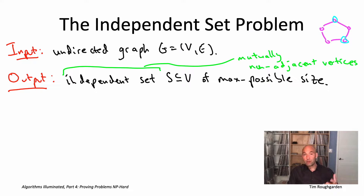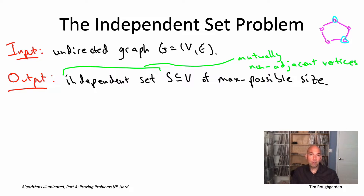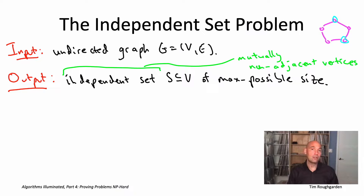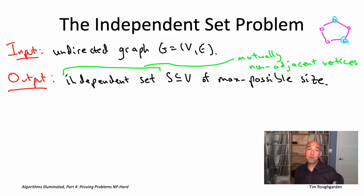That's the version of the problem for which we gave a linear-time algorithm using dynamic programming for path graphs, back in Part 3. More generally, for tree graphs you can solve the weighted independent set problem in linear time. What we're going to see here is that even the special case of the independent set problem where all vertex weights equal one — if you have general graphs — even this special case is NP-hard.